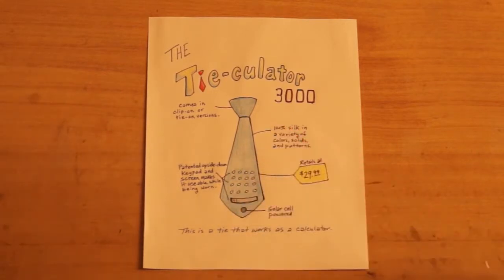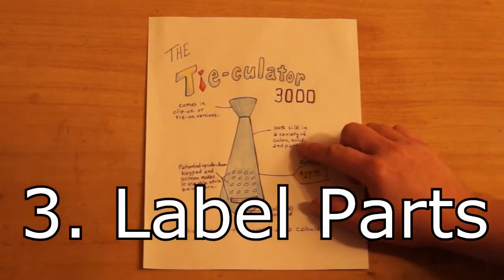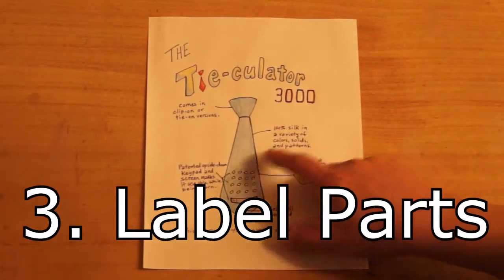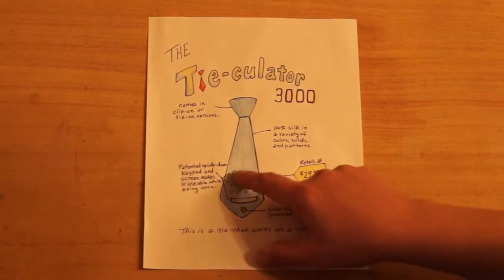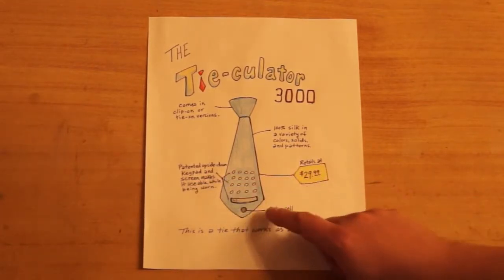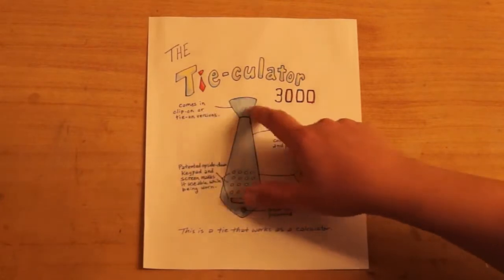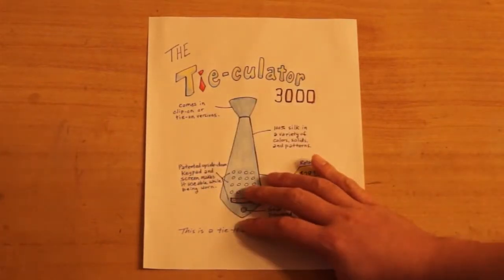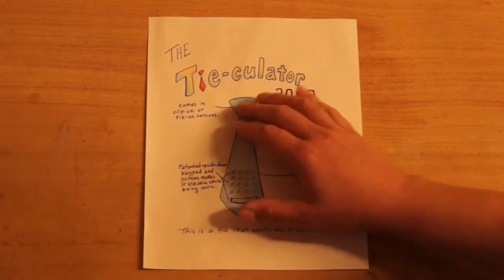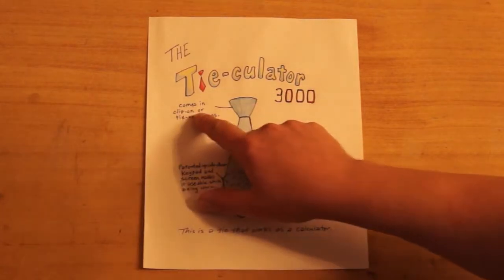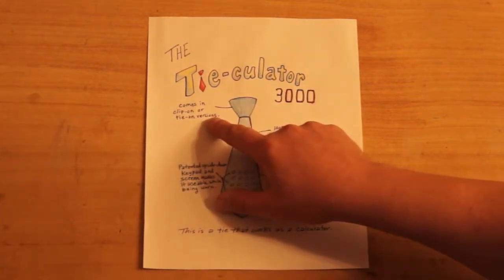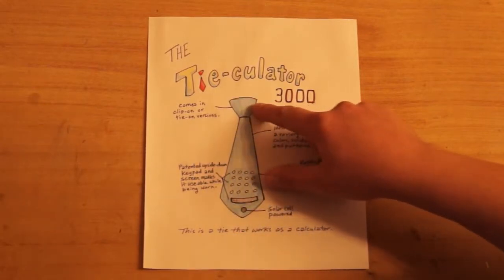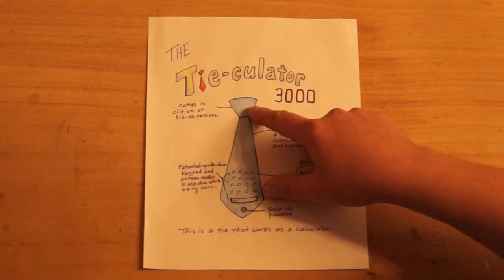The third thing is you need to label the parts. Now, in this case, I have labels that tell what is made out of and then also the parts of it. So you'll label everything that has to do with the invention, the different parts it has, maybe what it's made out of, those kind of things. Like here, it comes in clip-on or tie-on version. So you have two different designs you can choose from. And one is the clip-on and one is an actual one where you tie it.